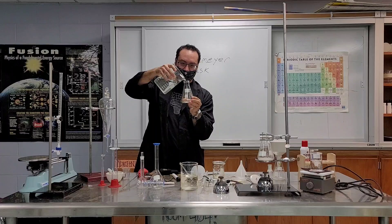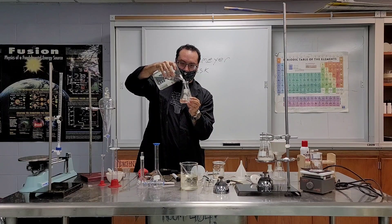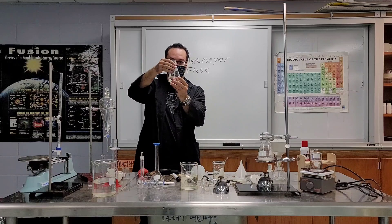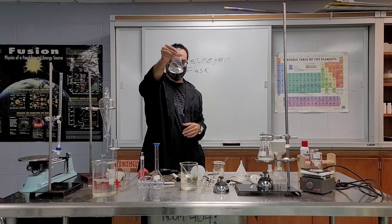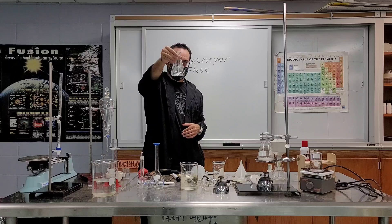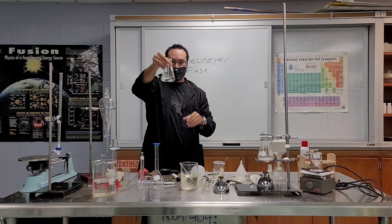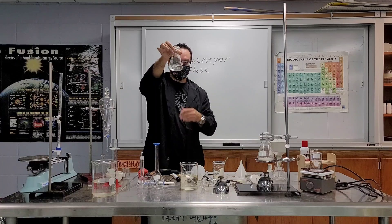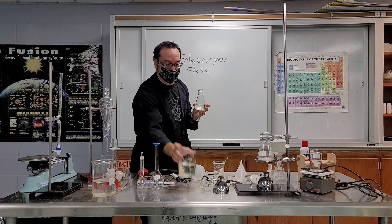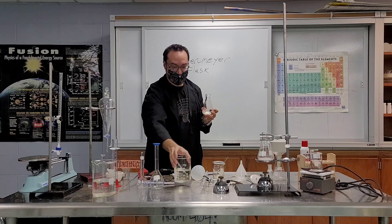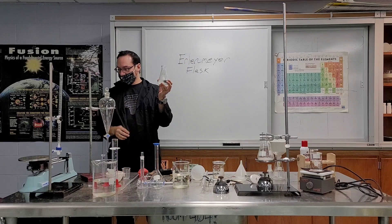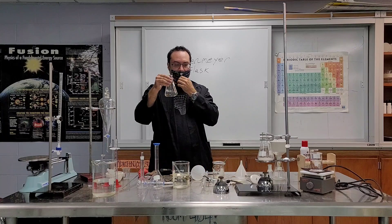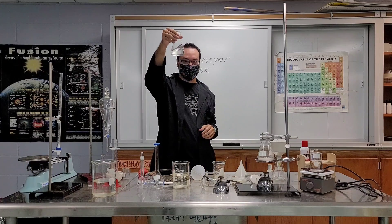Because the sides are turned like that, because there's an angle, look what you can do in an Erlenmeyer flask. See? I'm swirling pretty hard. And nothing's coming out. If I did that in the beaker, okay, this would be all over the place. So Erlenmeyer flasks are very good for mixing and swirling. So basically, if you wanted to look at a chemical reaction, you'd want to do it in a flask.